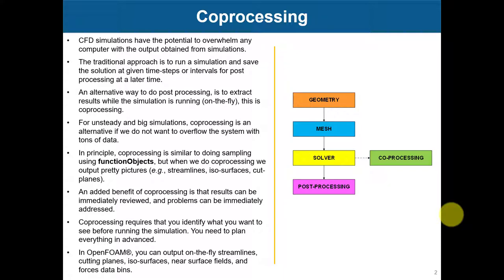The way we have done everything so far: we work with a small case, compute the solution, and then open it with ParaView or whatever you're using. Then you start to extract surfaces, isosurfaces, or cut planes — and that can be expensive, especially if you have large data cases, like DNS simulations where saving all those time steps is expensive. The idea behind co-processing is that while you are running, you are only extracting the data you are interested in. You don't need to save the whole field.